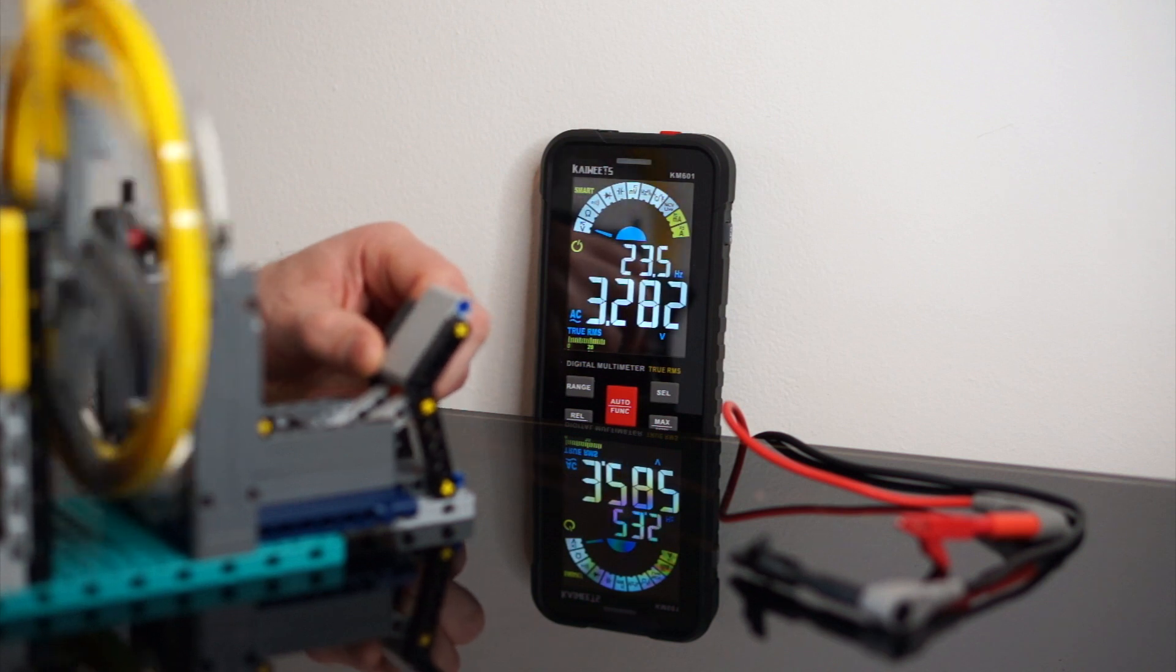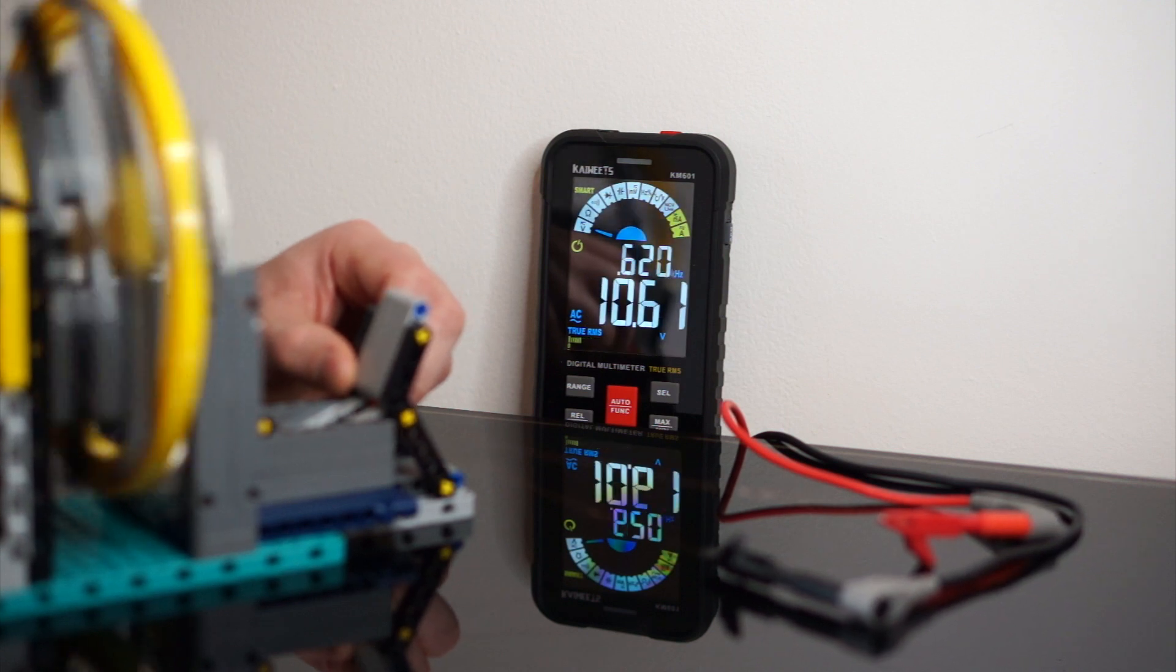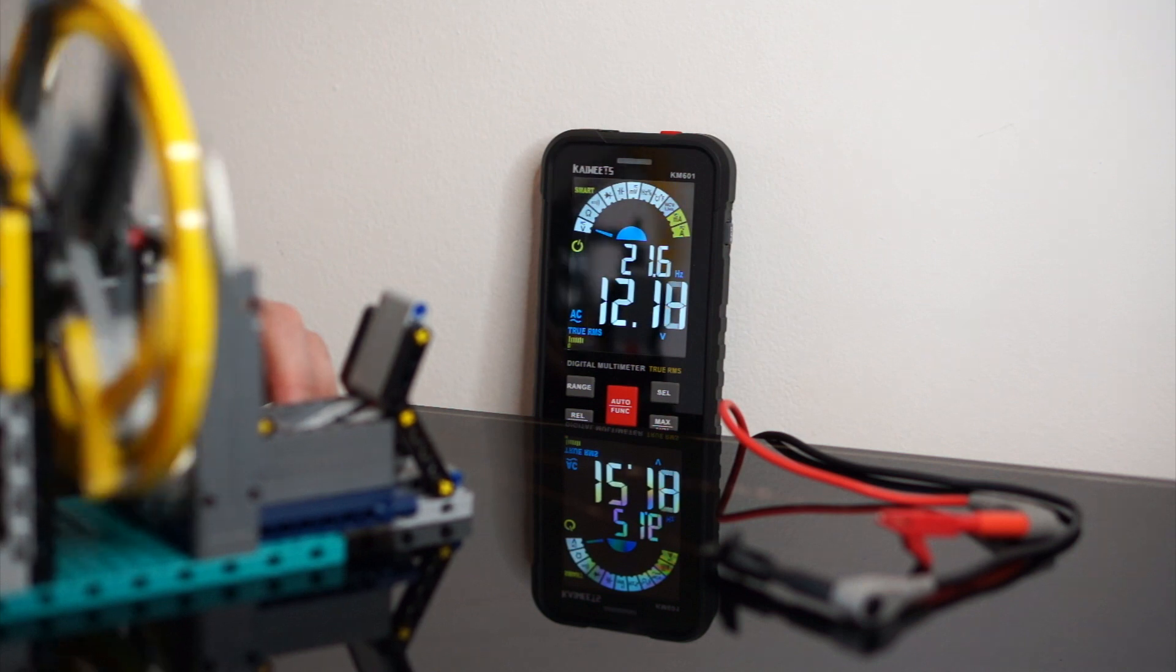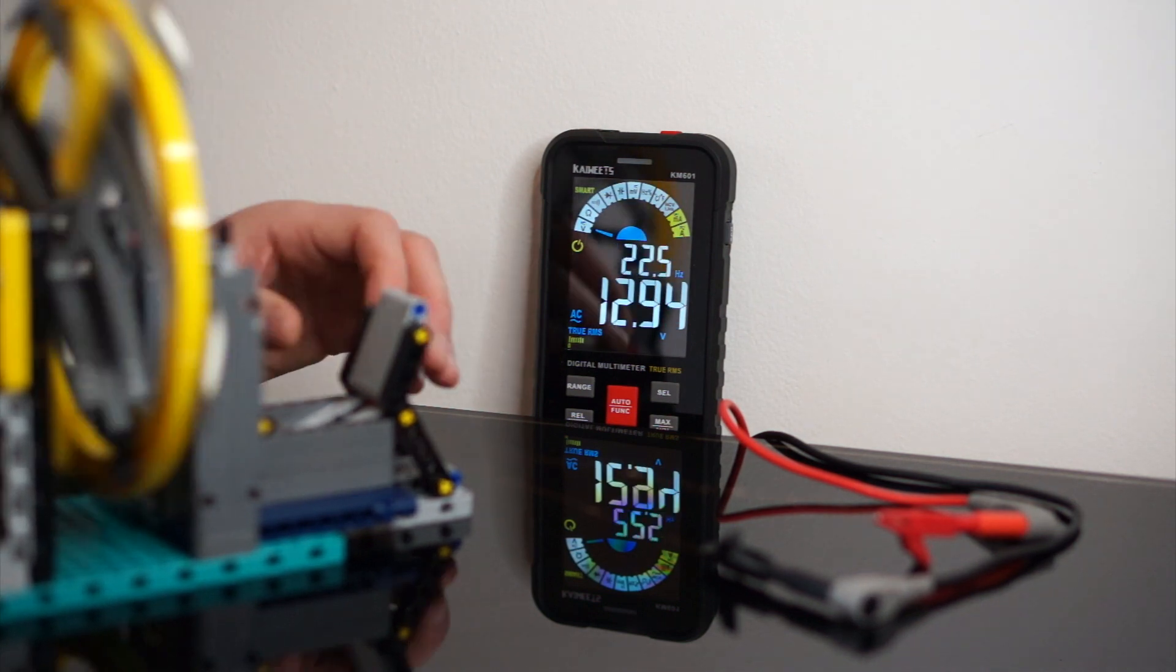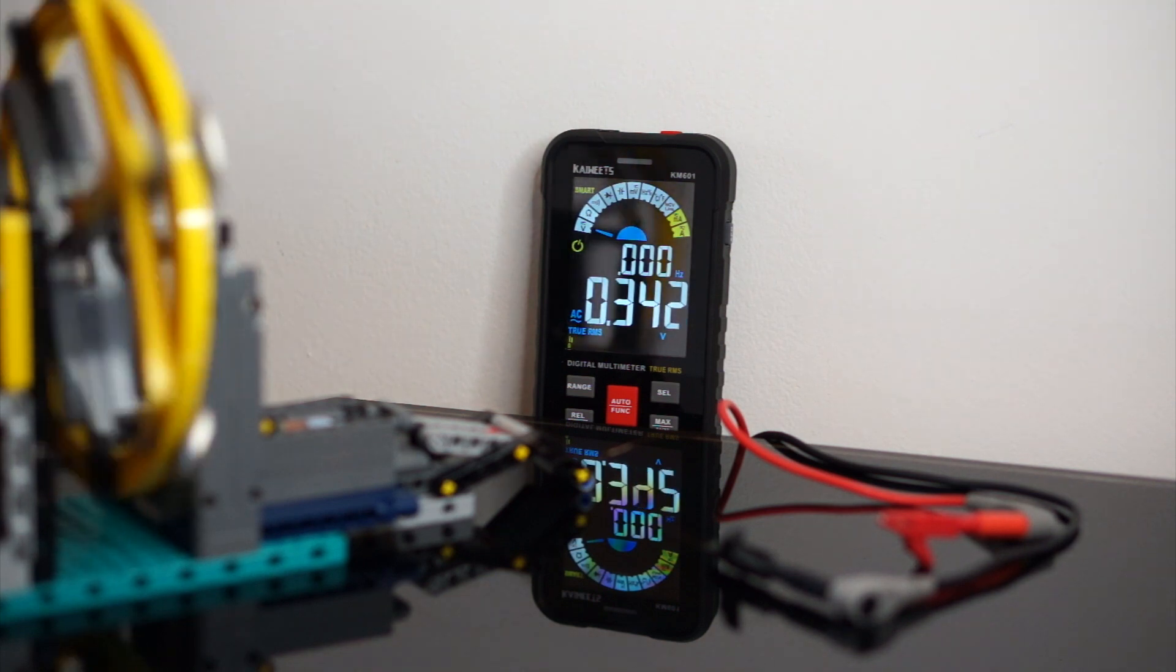And again as you can see when we bring the coil closer to the magnets the voltage begins to climb. And at full speed this coil seems to output somewhere around 12 volts. As we retract the coil from the spinning magnets the voltage immediately begins to drop.